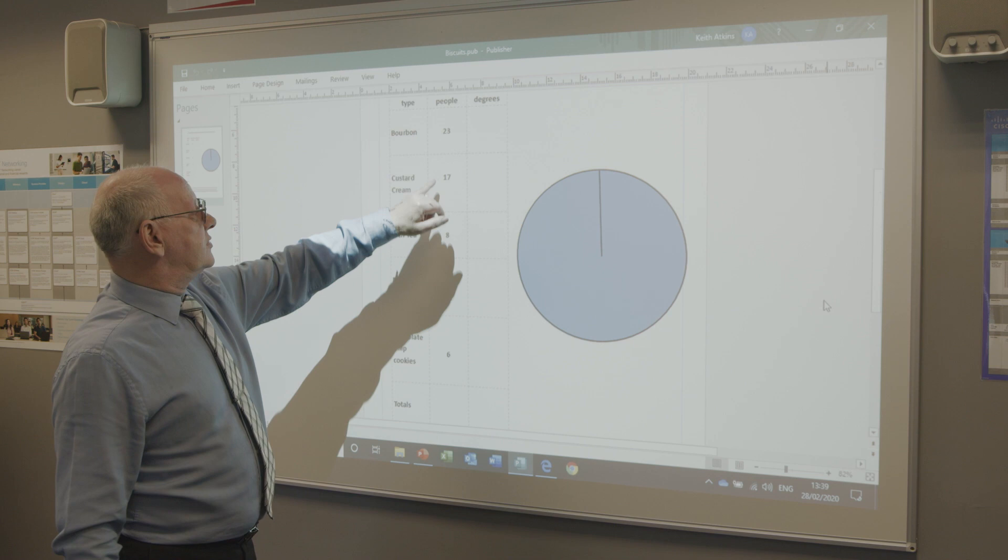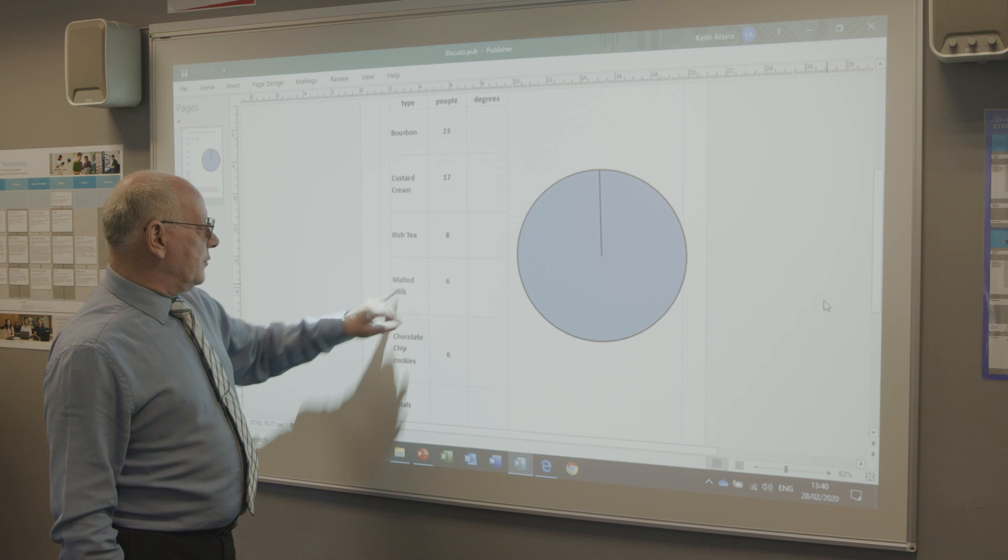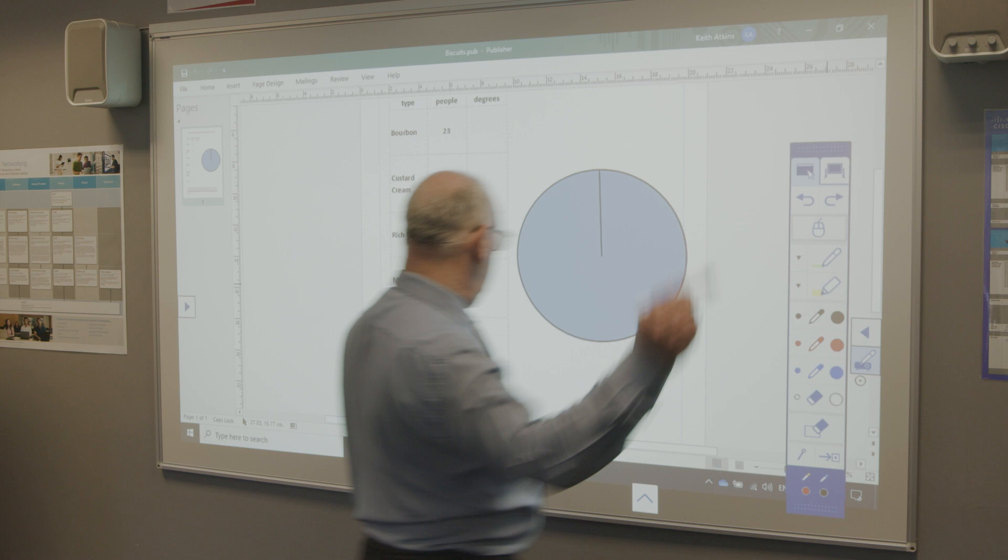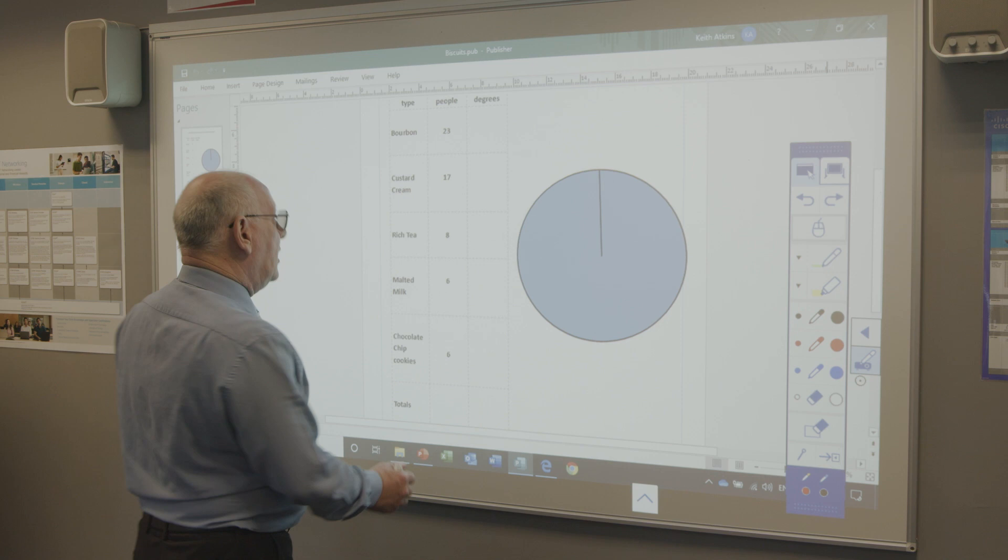And how many people said that that was their favourite? So 23 bourbon, 17 custard cream, 8 people said rich tea was their favourite, 6 said malted milk and 6 said chocolate chip cookies. And the first thing you have to do is add these number of people up. And that comes to 60.